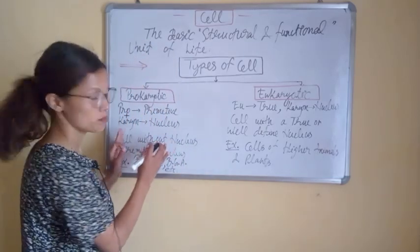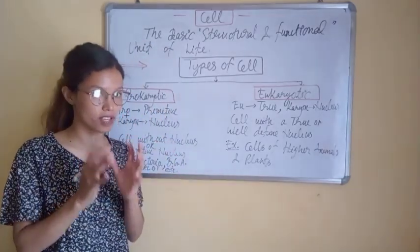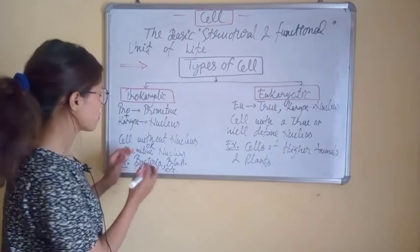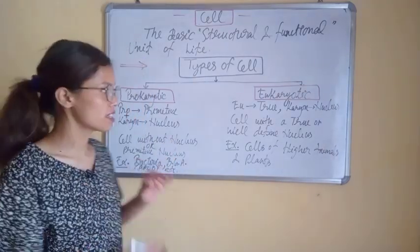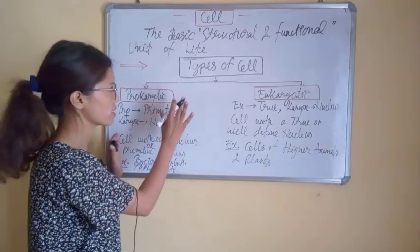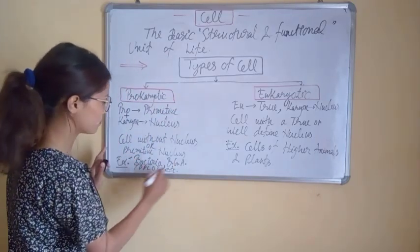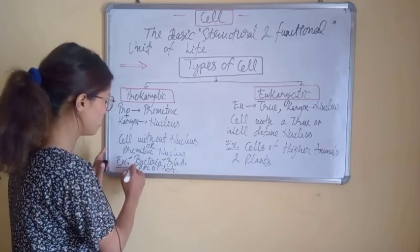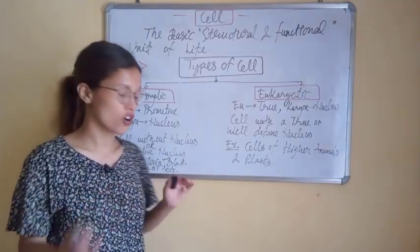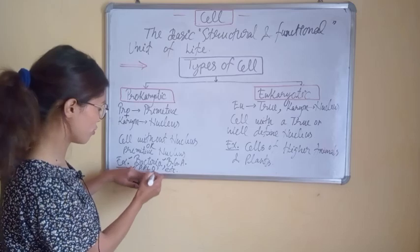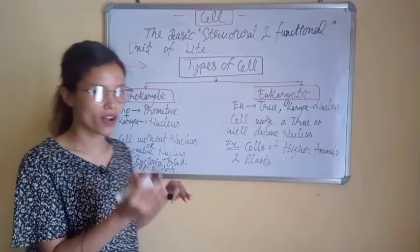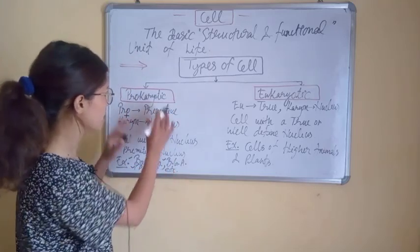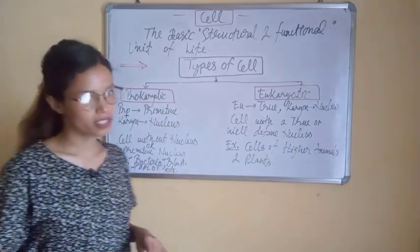There is no nucleus, but a nucleus-like structure is present which we call nucleoid or incipient nucleus. Examples of prokaryotic cells are bacteria, blue-green algae, and PPLO. PPLO, also known as mycoplasma, stands for pleuropneumonia-like organism. These are examples of prokaryotic cells.